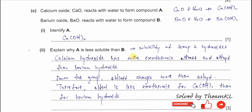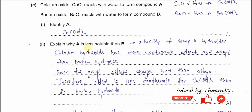Part C: Calcium oxide reacts with water to form compound A, which is obviously calcium hydroxide. Calcium oxide with water forms calcium hydroxide.